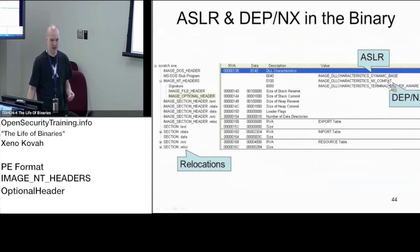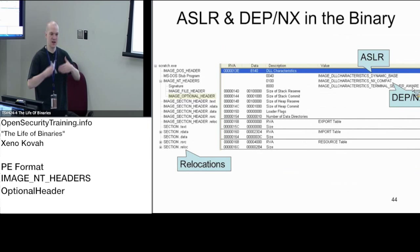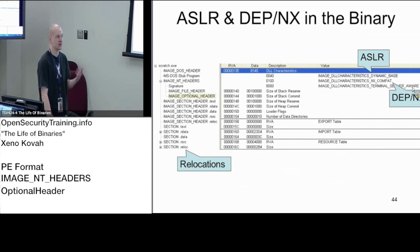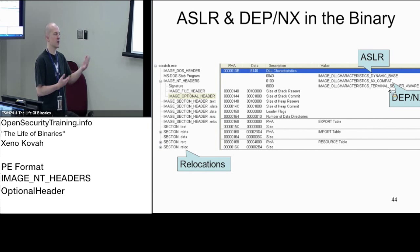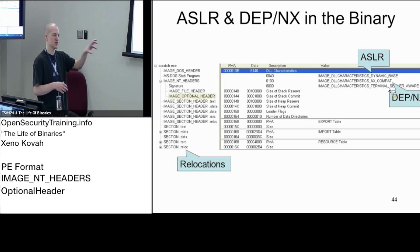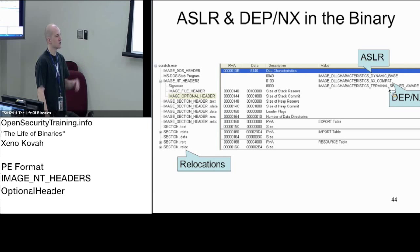One other flag to know is terminal server aware. A terminal server is basically the mechanism behind RDP — it allows you to remote desktop into a Windows machine and interact with it as if you were physically at a GUI. If this flag is not set, the kernel does background management to separate graphics for the current logged-in user, RDP user one, RDP user two. Terminal server aware says this binary can play that game in the background.